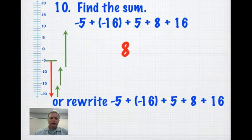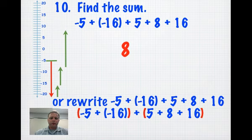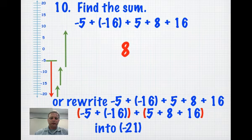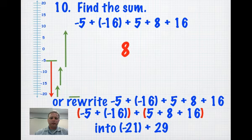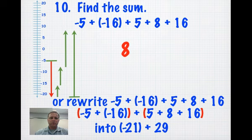Probably easier to rewrite this. So I have 5 negatives plus 16 negatives, and then 5 plus 8 plus 16, so I get negative 21 plus 29. That puts me at the same spot. I think you make a lot less mistakes when you do that.